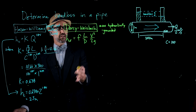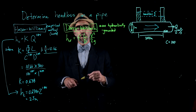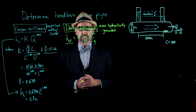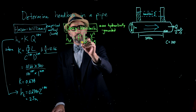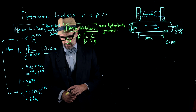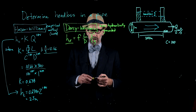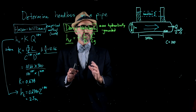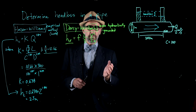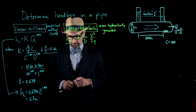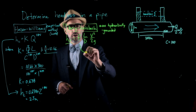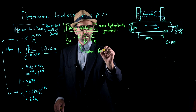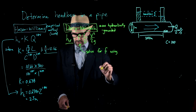The second method uses the Darcy-Weisbach equation. The head loss, shown as HLF in your textbook, is equal to F — a variable we solve using the Moody diagram — multiplied by L over D (length over diameter), multiplied by velocity squared over 2g (2 times gravity). First, we need to solve for F using the Moody diagram.